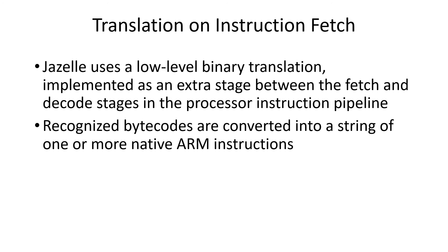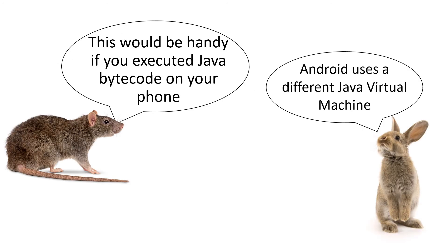The Jazelle version of the ARM processor does the translation from bytecodes to ARM instructions directly as it fetches the instruction. As it fetches a bytecode, it translates it into a series of ARM native instructions, and those native instructions are then fed to the rest of the processor pipeline. This would be handy if you executed Java bytecodes on your phone, but Android uses a different Java virtual machine and doesn't use bytecodes.